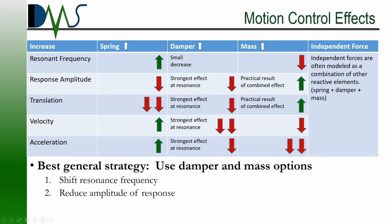Generally, your strategy is going to use some combination of a damper component and a mass component. In just a second I'm going to talk about what you can actually do to create damping and mass. But before you do any type of motion control, you have to look at this table and ask yourself: which element am I trying to change?